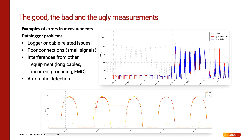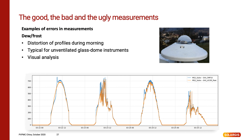DNI is calculated, and the consistency check is applicable only if you have separate measurements of all three components – global, diffuse and direct. Data logger problems are also possible to detect by both automatic and visual checks. Here we see several distorted days in the top picture and one distorted evening in the bottom picture. The source of these problems may be in the data logger itself. This can happen with wrong settings, overloaded inputs, bad cable connections or cable paths. If signal cables are tied together with power lines, high frequencies may induce into low-level signals and destroy the measurements. Dew or frost, as visible on the dome of this pyranometer, typically occurs during cold mornings where the glass dome is covered by small drops which distort measurements.